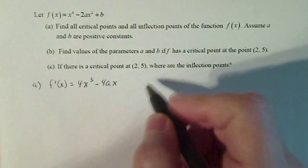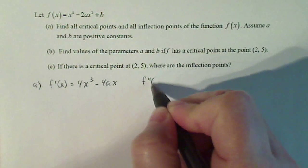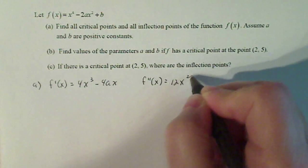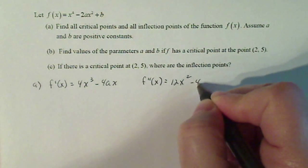And to find inflection points, I need the second derivative. So let's just do that right away. So that gives me 12x squared minus 4a.